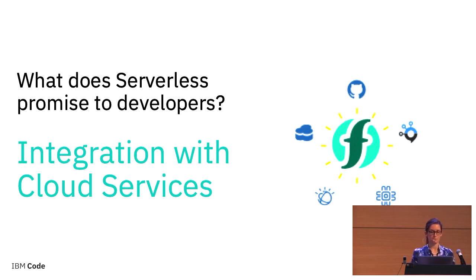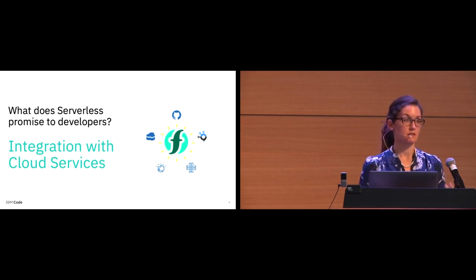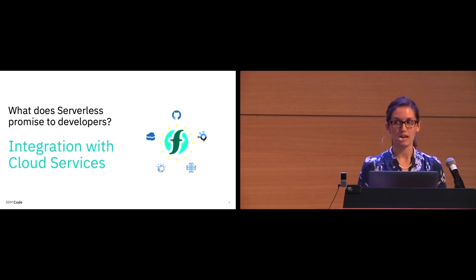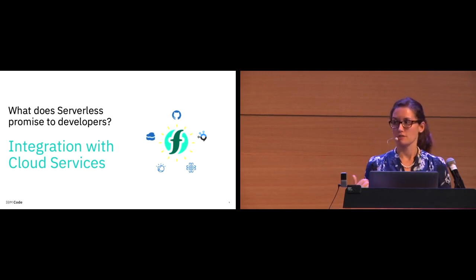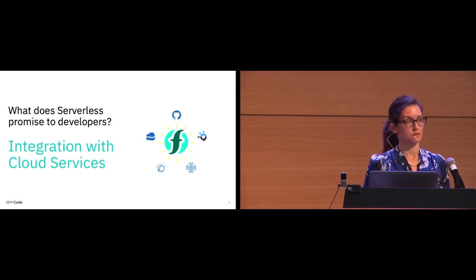Many cloud platforms offer a number of different services you can integrate with your applications — things like artificial intelligence, IoT platforms, object storage, or databases. Think of what you can do if you connect up with the Watson APIs from IBM or the Alexa APIs from Amazon and use those in conjunction with your application. Most serverless solutions are really incentivized for you to use their other services, so they make that connection very seamless. As you look at moving workloads to serverless, definitely look into what integrations are provided and what other services you can easily connect up to.